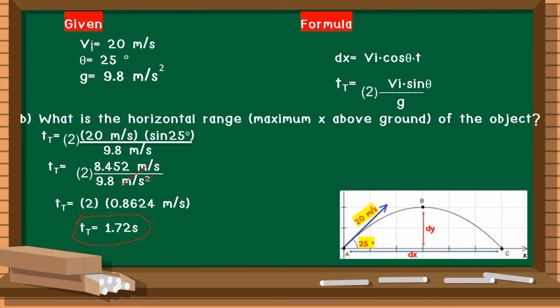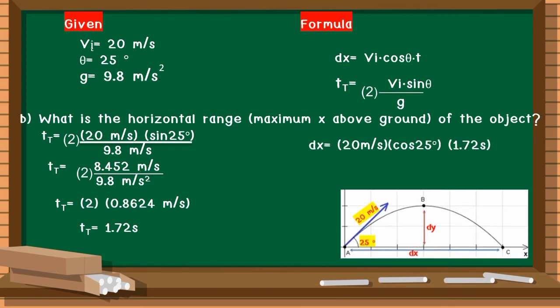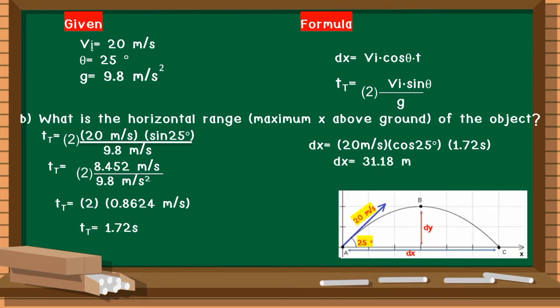Now that we have the time, we can find dx (horizontal range). Using the formula dx = Vi × cos θ × t, substituting: 20 m/s × cos 25° × 1.72 s gives dx = 31.18 meters. So our horizontal range is 31.18 meters. As easy as that!